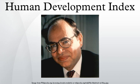In its 2010 Human Development Report, the UNDP began using a new method of calculating the HDI. The following three indices are used: (1) Life Expectancy Index; (2) Education Index, comprising 2.1 Mean Years of Schooling Index and 2.2 Expected Years of Schooling Index; and (3) Income Index. Finally, the HDI is the geometric mean of the previous three normalized indices: L.E. (Life Expectancy at Birth), M.Y.S. (Mean Years of Schooling), E.Y.S. (Expected Years of Schooling), and G.N.I.P.C. (Gross National Income at Purchasing Power Parity Per Capita).